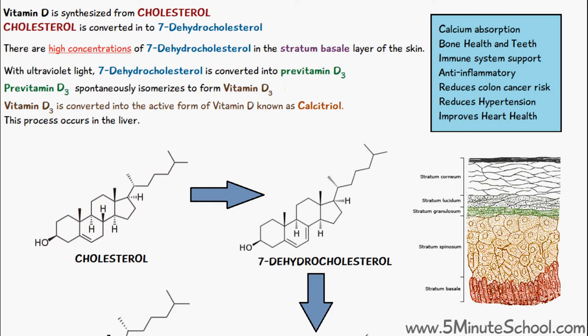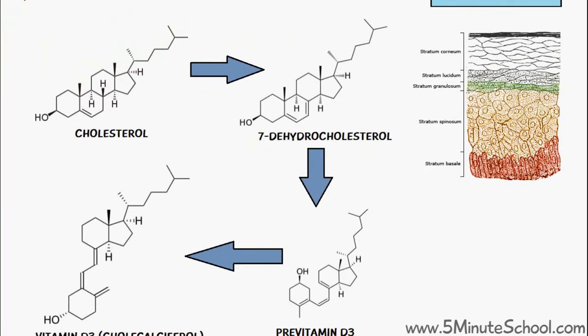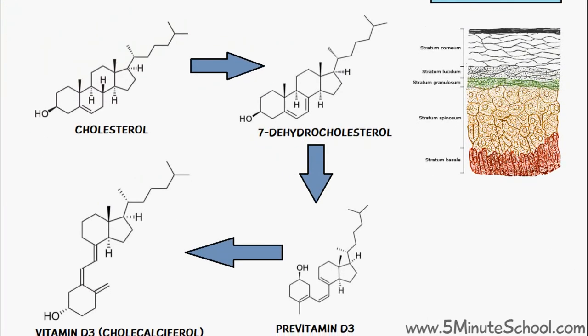This pre-vitamin D3 isomerizes into another form called vitamin D3, and then vitamin D3 is converted into the active form of vitamin D, which is known as calcitriol — this process occurs in the liver. This diagram shows you specifically the molecular structures of each molecule as it goes through the process. We have cholesterol being converted into 7-dehydrocholesterol, with high concentrations in the stratum basale layer.